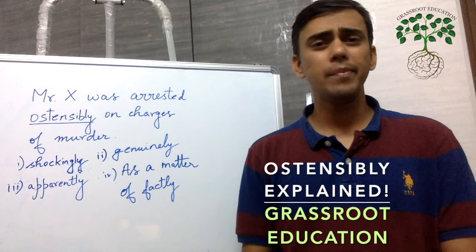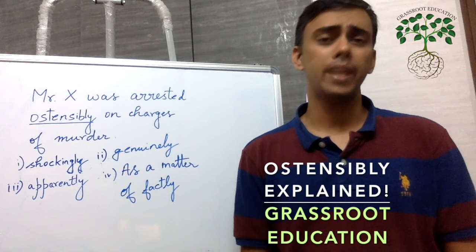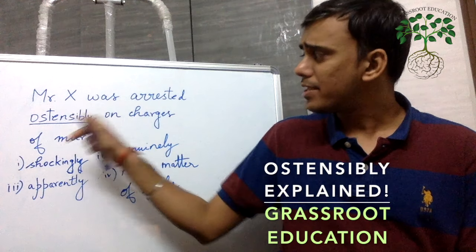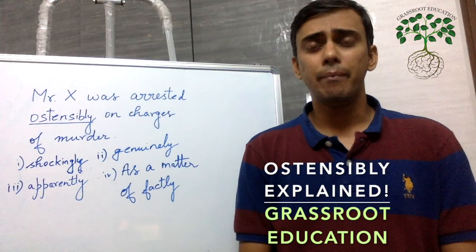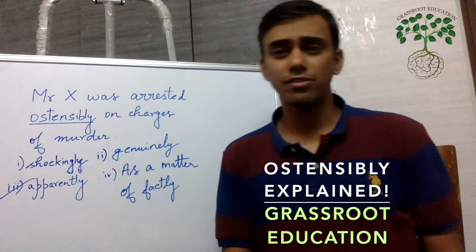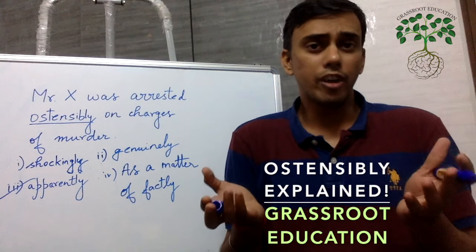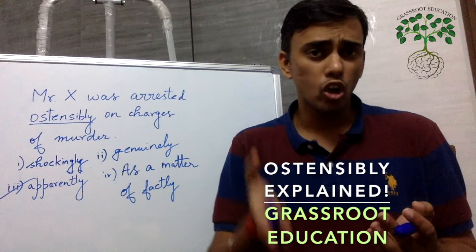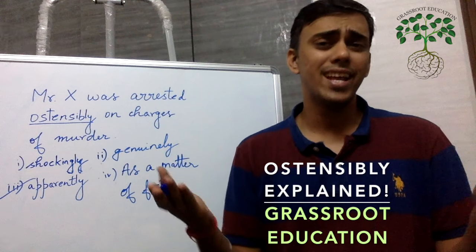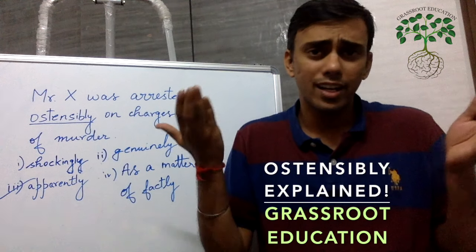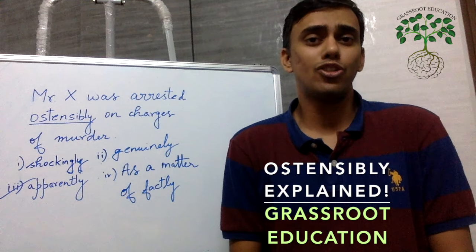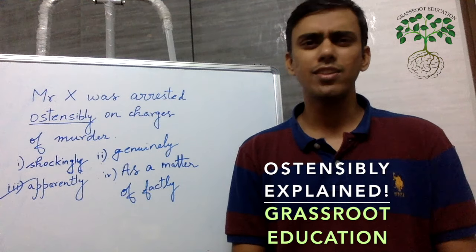'Apparently' means maybe, or probably. So 'Mr. X was arrested ostensibly on charges of murder' means 'Mr. X was arrested apparently on charges of murder' — it means it's not confirmed yet. You don't know for sure he was arrested on charges of murder. That's what people are saying; those are the kind of reports coming in. So apparently on charges of murder — I can't say I'm 100% sure about it.